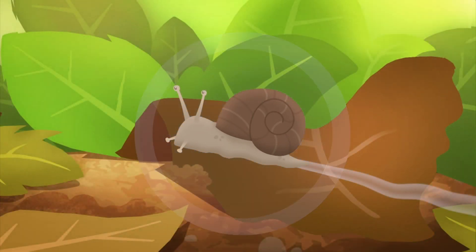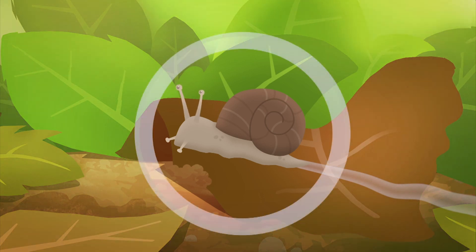Snails are called detritivores. They eat rotten leaves and help the soil by recycling waste and keeping goodness in the ground so that plants and crops can grow.